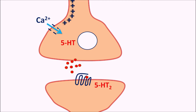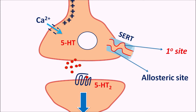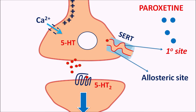When 5-HT2 receptors are activated, they produce excitation in the post-synaptic neurons. The action of released 5-HT depends on how much time it is available within the synaptic cleft, because presynaptic neurons express uptake transporters — the SERT (serotonin reuptake transporter). SERT has two sites: a primary site and an allosteric site. Paroxetine blocks SERT at both the primary site and the allosteric site, preventing 5-HT reuptake so it remains within the synaptic cleft.